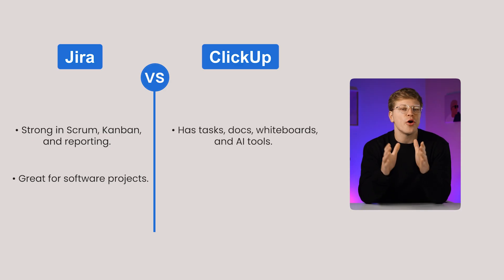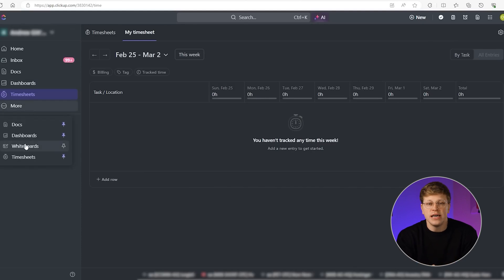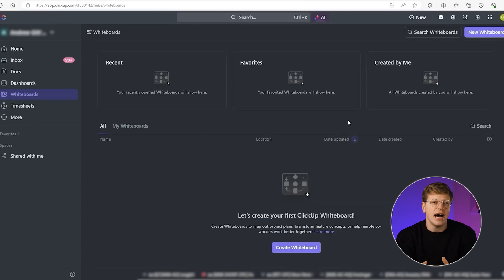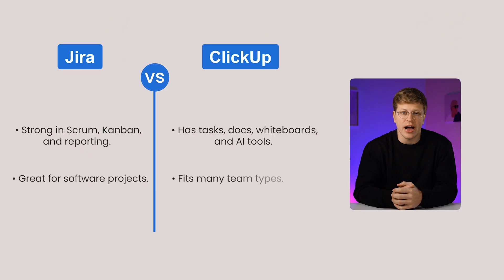ClickUp is made to work for almost any type of team. Along with boards and timelines, it has built-in chat, documents, whiteboards, mind maps, and even AI to help write summaries or create plans. You can also track workloads and time spent on tasks. So the verdict is: JIRA is stronger for software development and detailed project tracking, whereas ClickUp is better if you want one tool for tasks, communication, and planning all in one place.